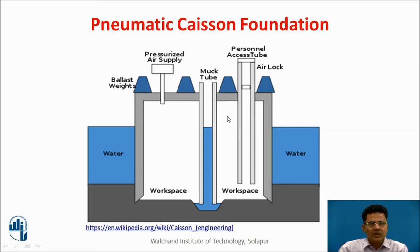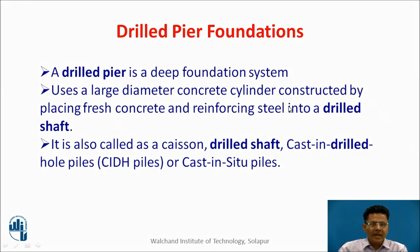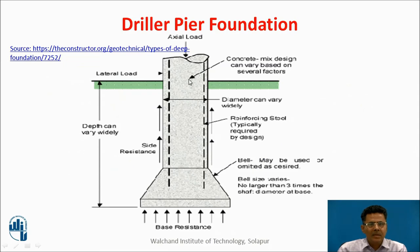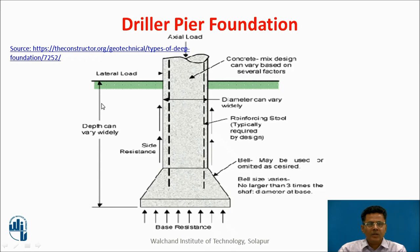There is one more type of foundation: the drill pier. A drill pier is a deep foundation system that uses a large-diameter concrete cylinder constructed by placing fresh concrete and reinforcing steel into a drilled shaft. It is also called a caisson, drilled shaft, cast-in-drilled-hole pile, or cast in-situ pile. The diameter can vary as required, and a base resistance is provided at the bottom.